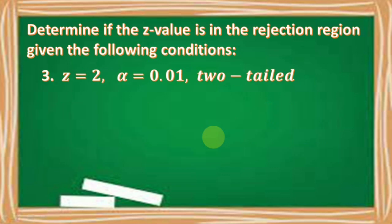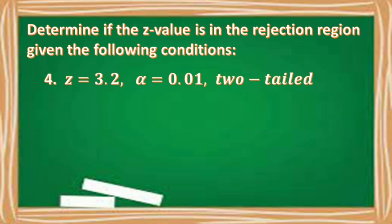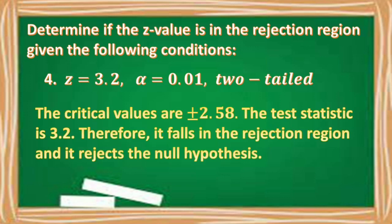Number three: Z = 2, α = 0.01, two-tailed. Critical values are ±2.58. Since 2 < 2.58, it falls in the acceptance region — do not reject the null hypothesis. Number four: Z = 3.2, α = 0.01, two-tailed. Critical values are ±2.58. Since 3.2 > 2.58, it falls in the rejection region — reject the null hypothesis.